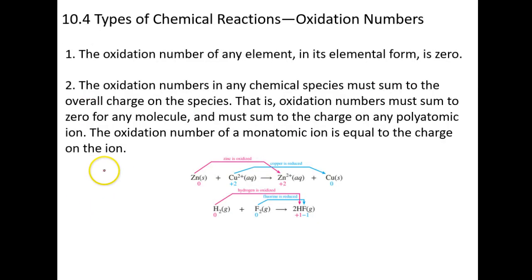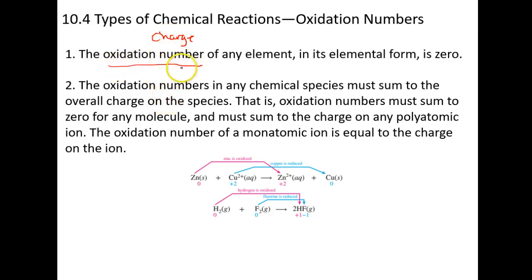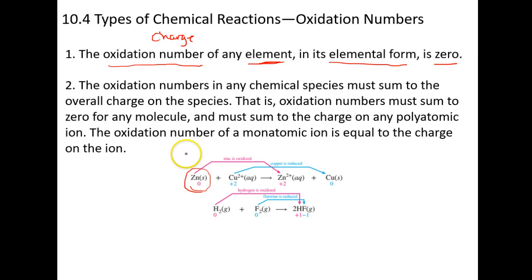This is actually called oxidation states or oxidation numbers — up until now we've been calling them charges. The first rule: elements in the elemental form or elemental state always have an oxidation state of zero. If you have a hunk of iron or sodium metal, that has an oxidation state of zero.